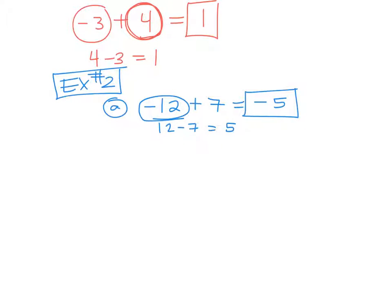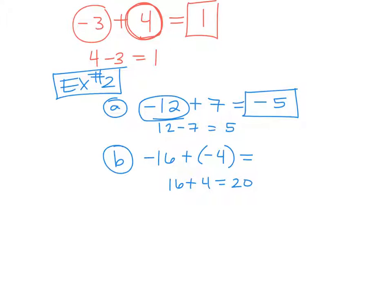How about this one? Let's say we have negative 16 plus a negative 4. Do they have the same sign or different sign? Same. When you have the same sign, do you add or subtract? Add. So we're going to do 16 plus 4, which is 20. And what sign do we attach to it? Negative. Because they were both negative numbers — if they're both negative, then your answer is negative. So you add them together and keep the sign.